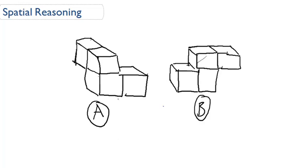So spatial reasoning basically requires you to compare two different figures and ask yourself, are they the same figure? Are they just maybe oriented in different directions or in different orientations? So if we look at A and B, these are not the same shape.